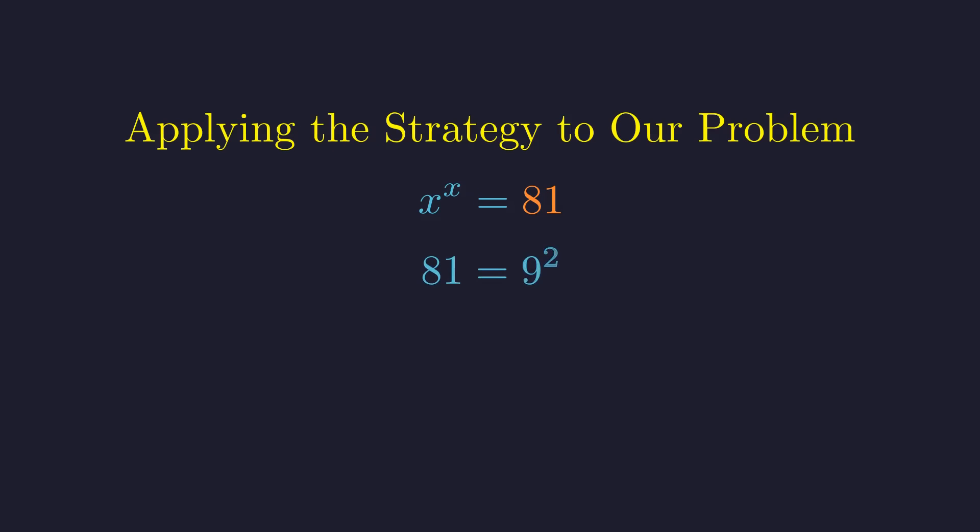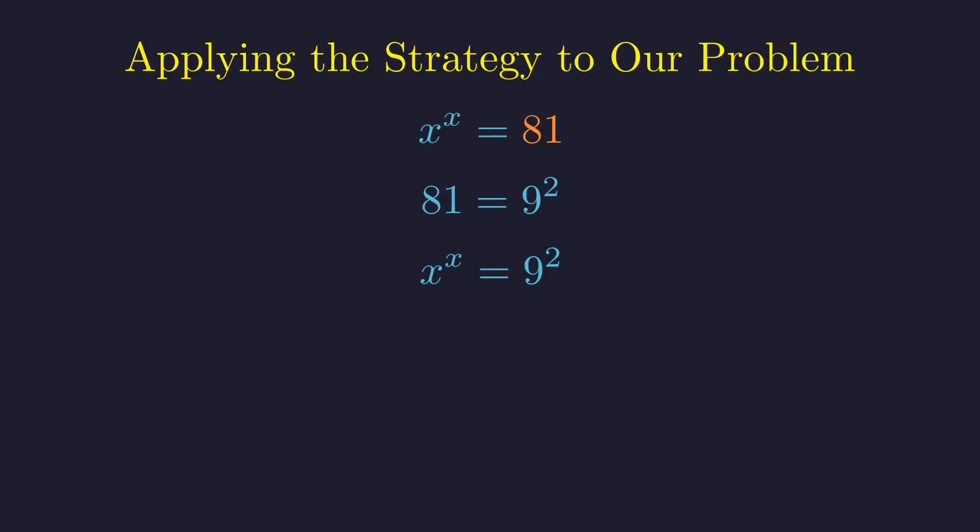First, 81 can be expressed as 9 squared. This substitution gives x to the x equals 9 squared. In this form, the base is 9 and the exponent is 2. Since they do not match, this representation does not lead to a solution.